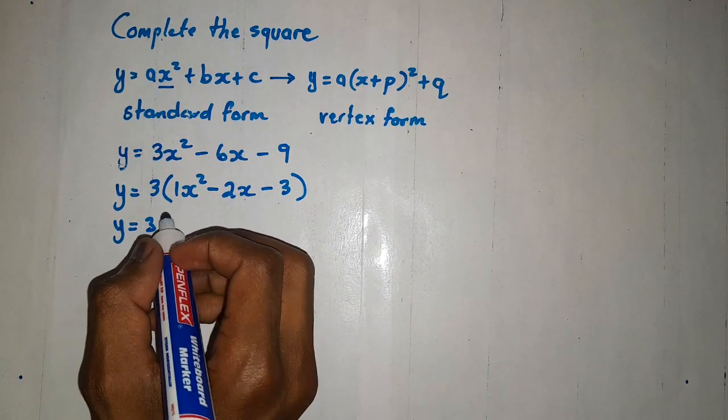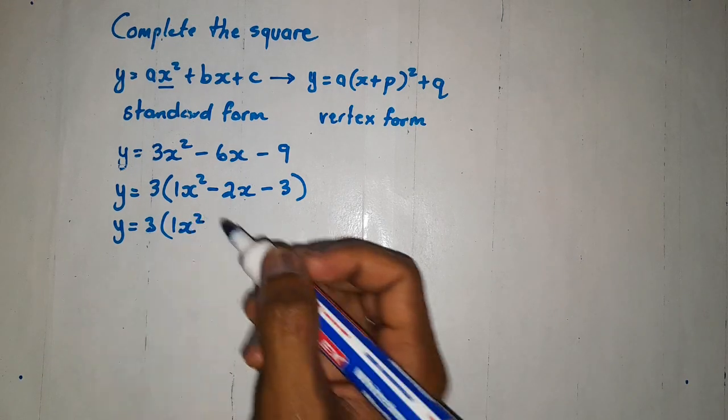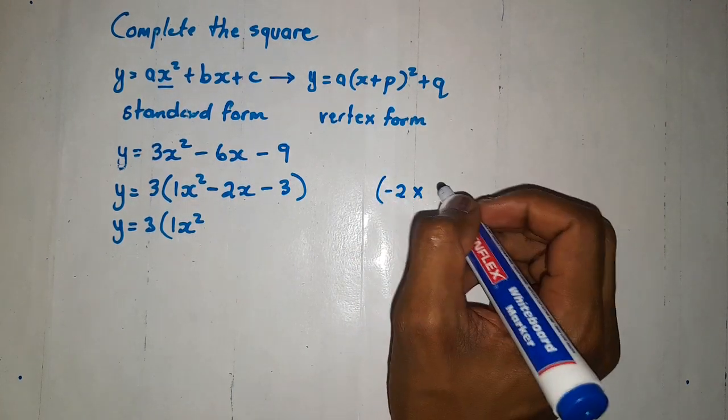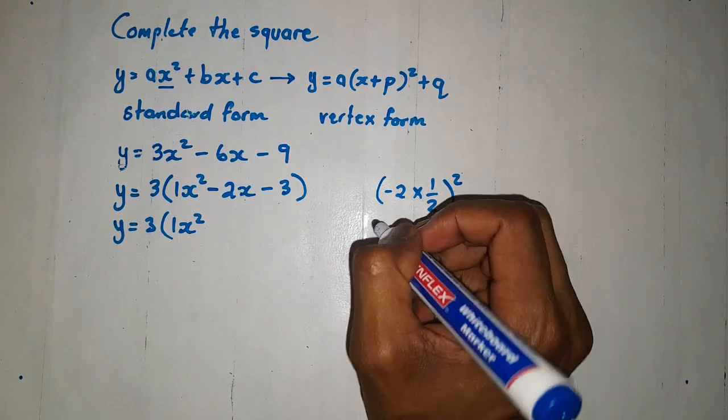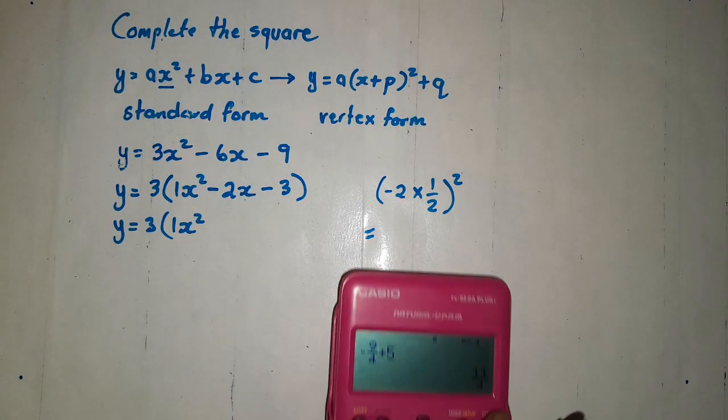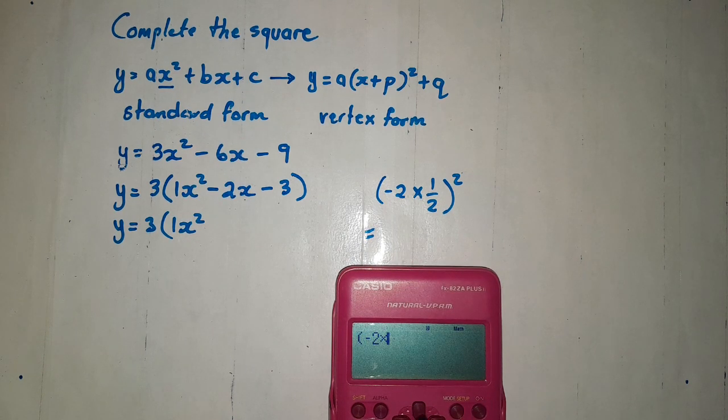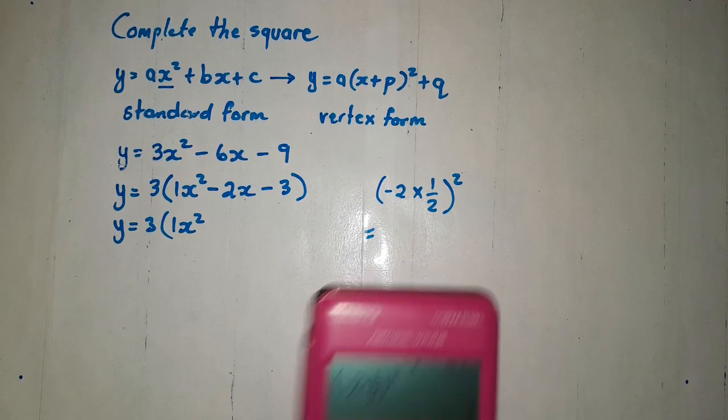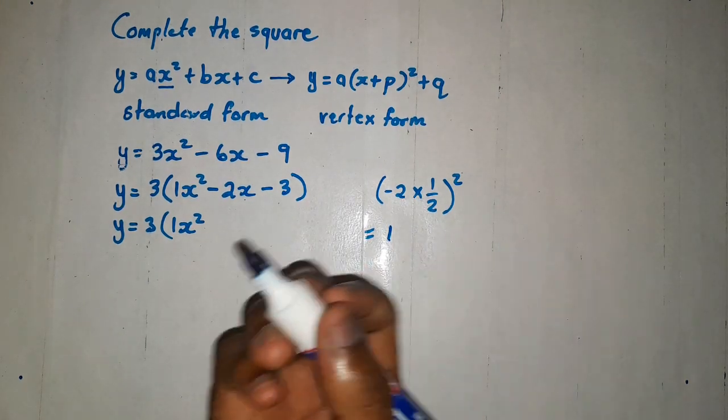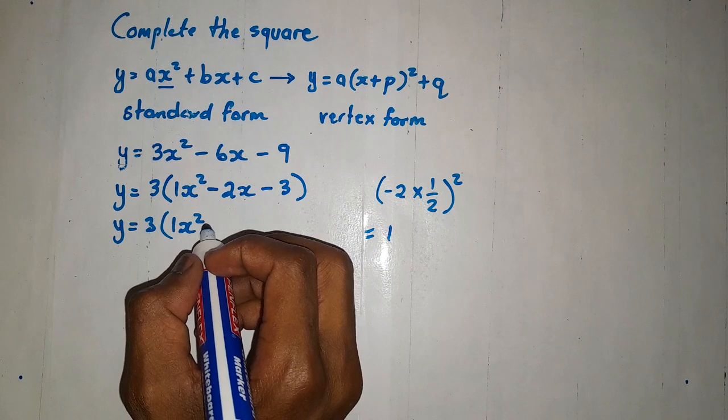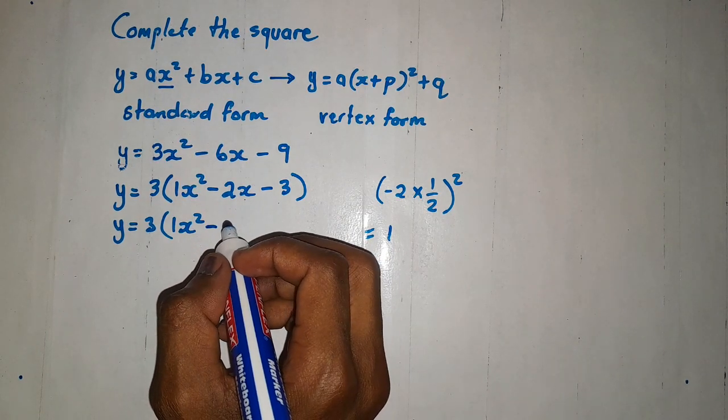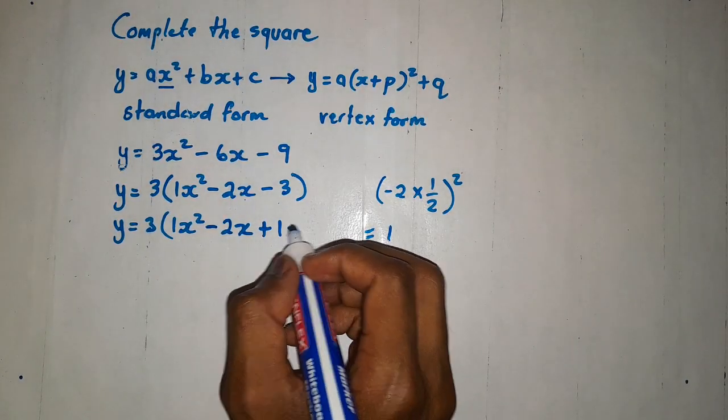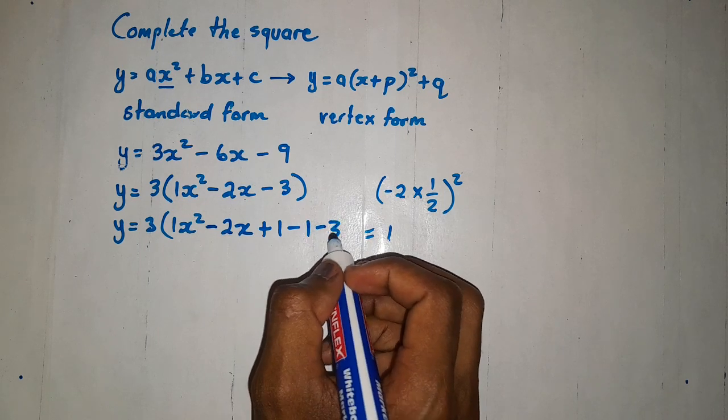Then, at this point, we can then take the middle term, which is negative 2, then multiply it with 1 over 2, then we square. Take your calculator in order to avoid mistakes, negative 2 over 2, we square. Get 1. Then, we are going to say x squared minus 2x. We write plus. We start with plus 1, then subtract 1, minus 3, then we close.